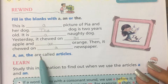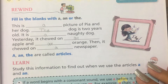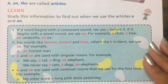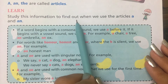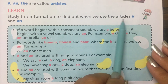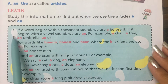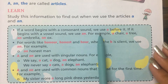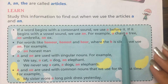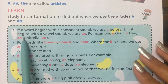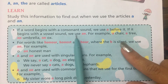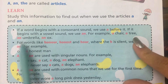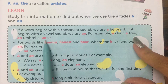A and The are called articles. Learn. Study this information to find out when we use the articles A and An. If a word begins with a consonant sound, we use A before it. If it begins with a vowel sound, we use An. For example: a chair, a tree, an umbrella, an ox.